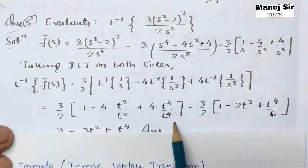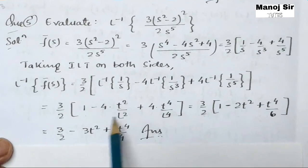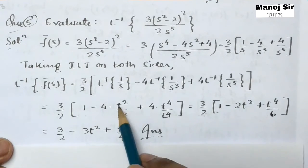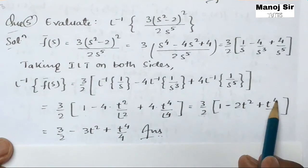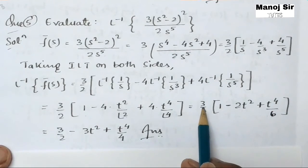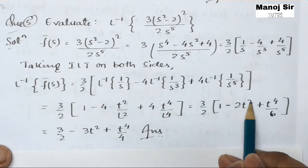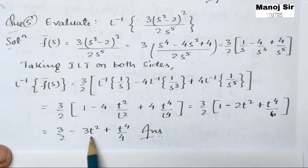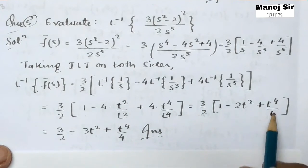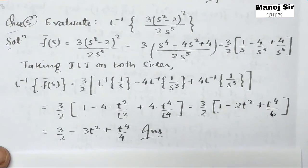Now simplifying: 3/2 is outside the bracket. We have 1 as the first term. For the second term, 4/2 = 2, so we get minus 2t². For the third term, 4/4! = 4/24 = 1/6, giving t⁴/6 multiplied by 3. Opening the bracket: 3/2 − 3t² + t⁴/4. This is the final answer.